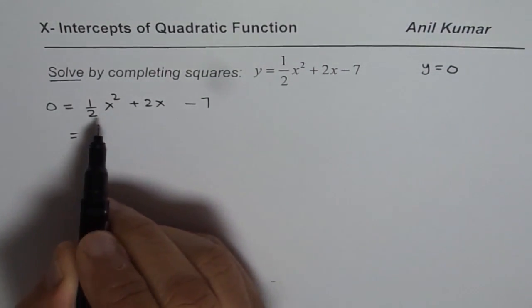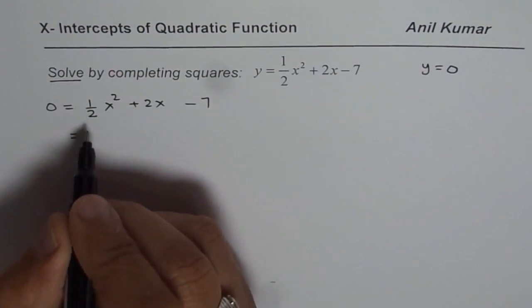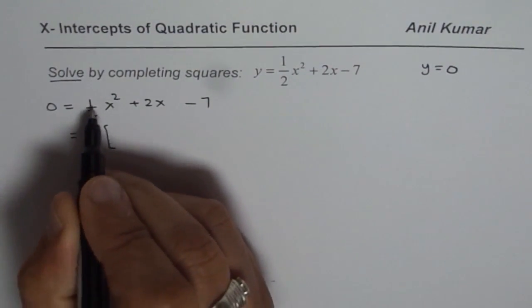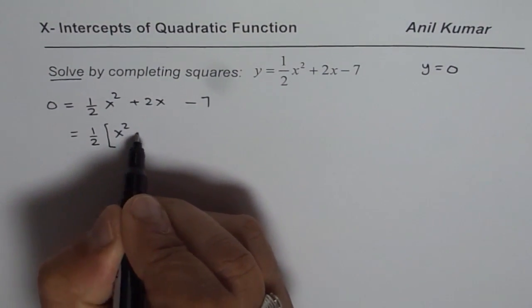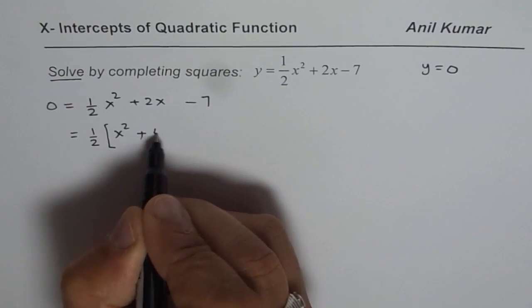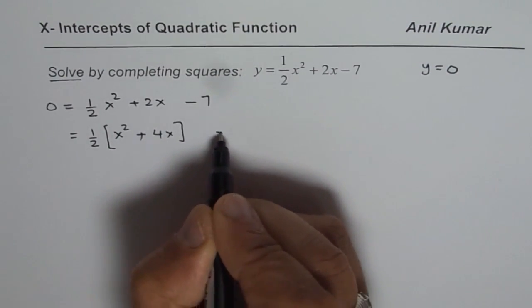Now we will do completing the squares method to find the value of x. In that, first step is factor the leading coefficient which is half in our case. So when you factor out half, you get x squared plus 4x minus 14.